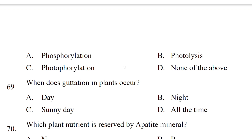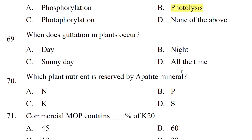When does guttation in plants occur? The correct answer is at night time. Which plant nutrient is stored by appetite mineral? The options are nitrogen, phosphorus, phosphorus-potassium, or sulfur. The correct answer is phosphorus.